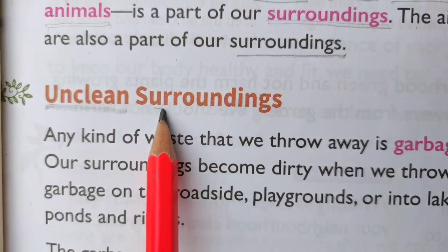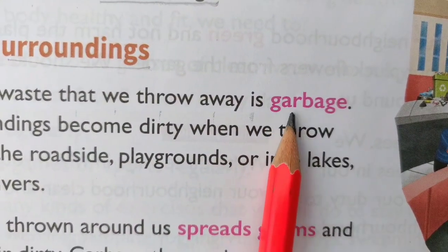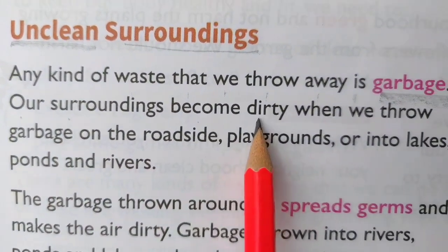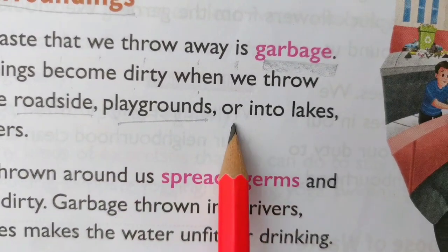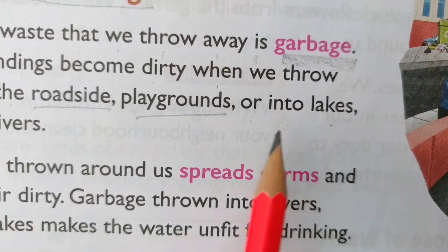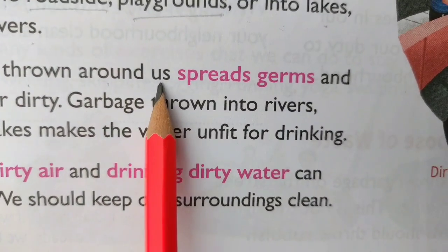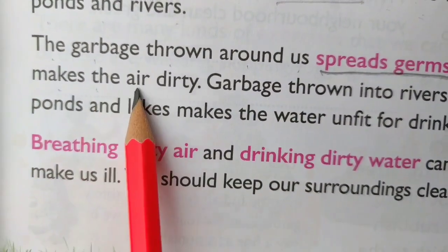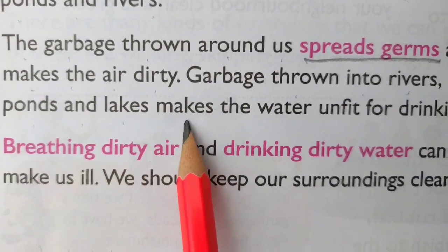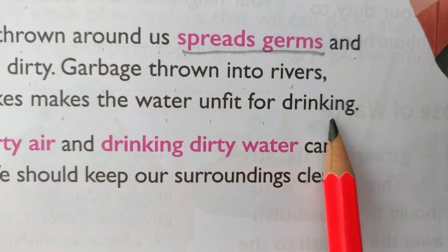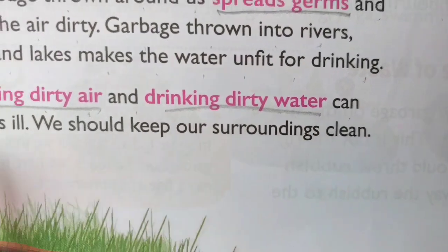Any kind of waste that we throw away is garbage. Our surroundings become dirty when we throw garbage on the roadside, playgrounds, or into lakes, ponds and rivers. The garbage spread around us spreads germs and makes the air dirty. Garbage thrown into rivers, ponds and lakes makes the water unfit for drinking. Breathing dirty air and drinking dirty water can make us ill.